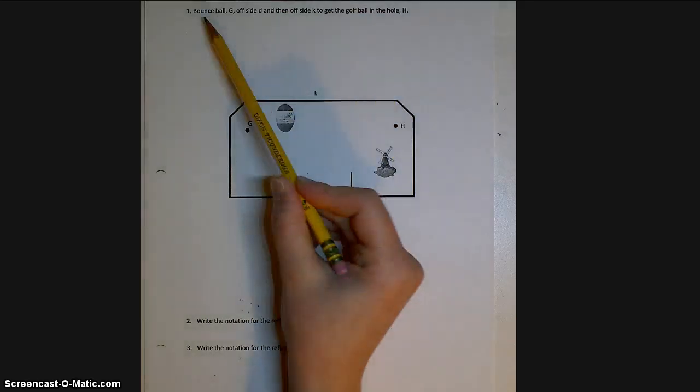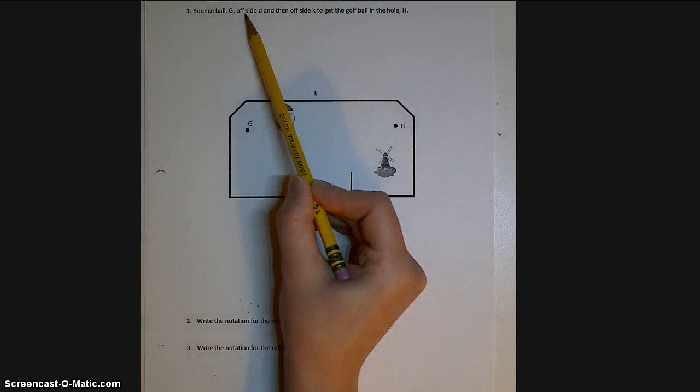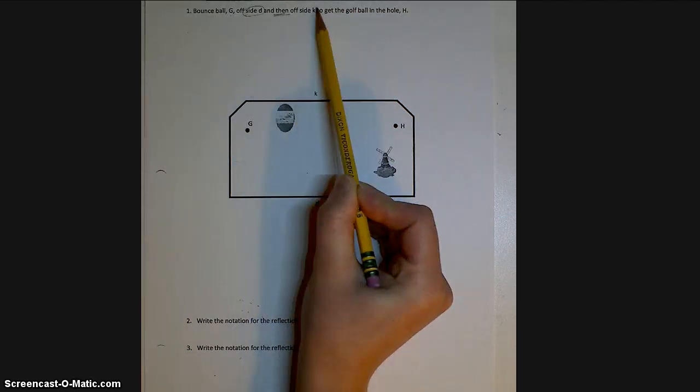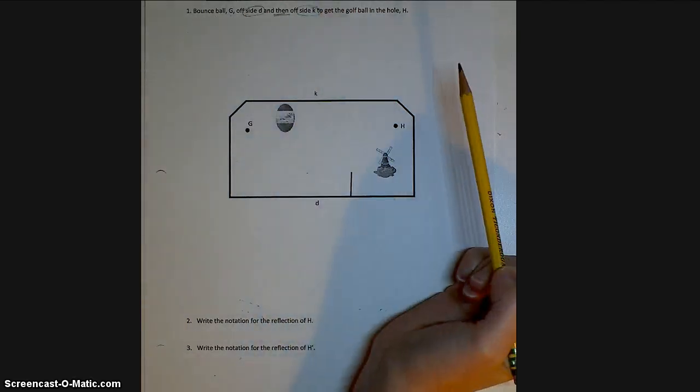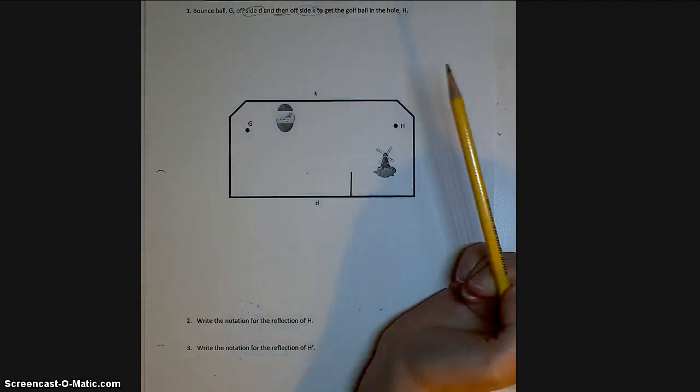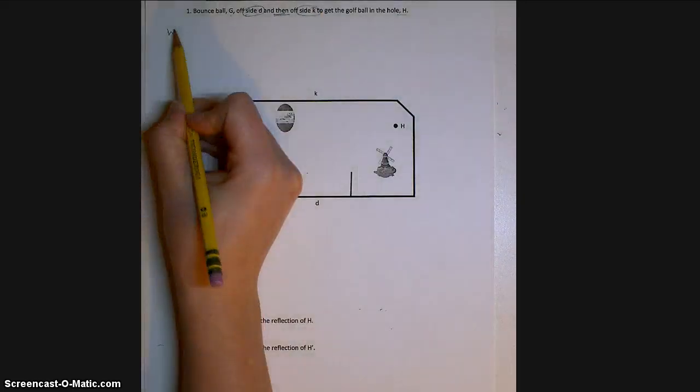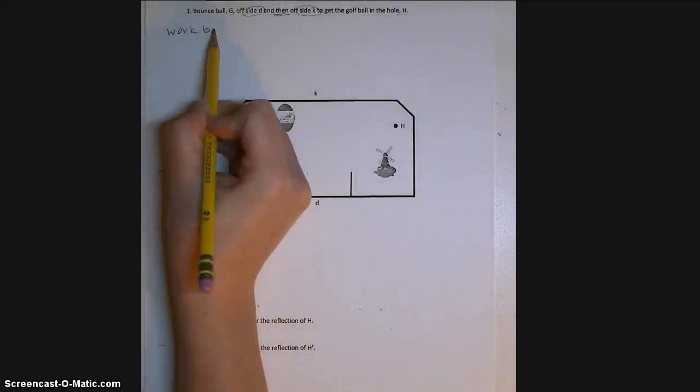Okay, so here's a question. We want to bounce golf ball G off side D, then side K to get a hole in one into the hole H. Well, we know when we're doing these problems, we always have to work backwards.